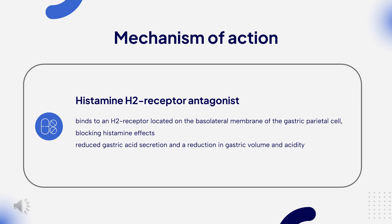Mechanism of Action: Histamine acts as a local hormone that stimulates acid output by parietal cells via a paracrine mechanism. Neuroendocrine cells called enterochromaffin-like (ECL) cells lie close to the parietal cells and regulate the basal secretion of histamine. Histamine release is also stimulated by acetylcholine and gastrin, a peptide hormone. Gastrin G-cells release gastrin, which works on CCK2 receptors on ECL cells, promoting the release of histamine from ECL cells.